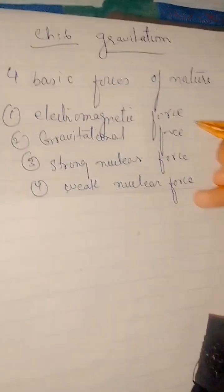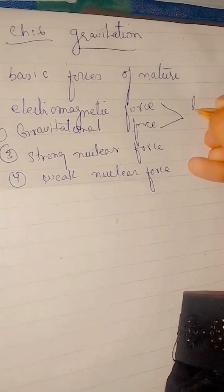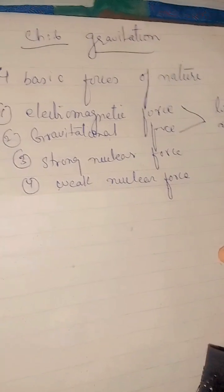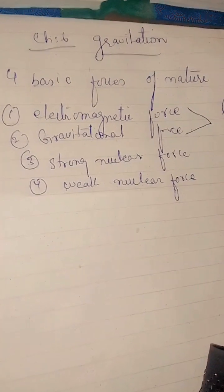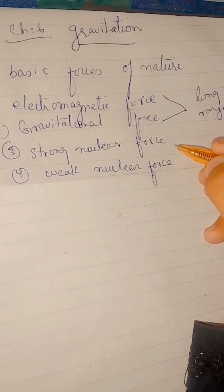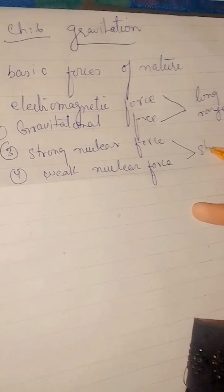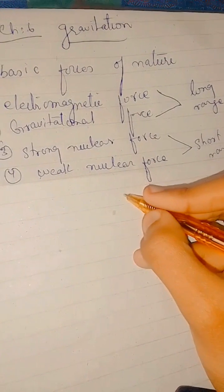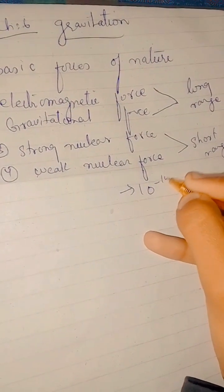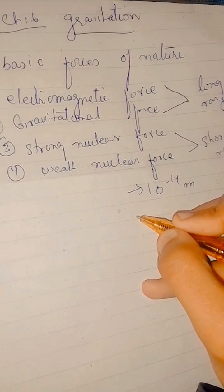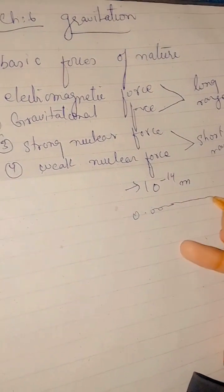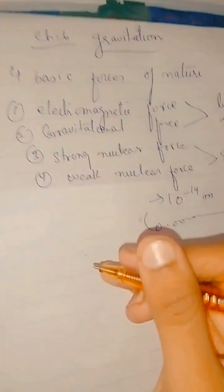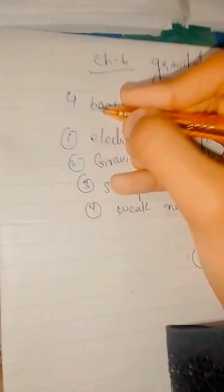If you talk about the range, the electromagnetic and the gravitational force are basically long-range forces. The strong nuclear force and the weak nuclear force are short-range forces. The diameter of a nucleus is about 10 to the power of minus 14 meters, which is why they have a short range.